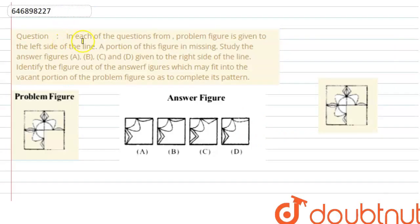Hi guys, now we will do a question which says: In each of the questions, a problem figure is given to the left side of the line. A portion of this figure is missing. Study the answer figures A, B, C, and D given on the right side of the line. Identify the figure out of the answer figures which may fit into the vacant position of the problem figure so as to complete its pattern.